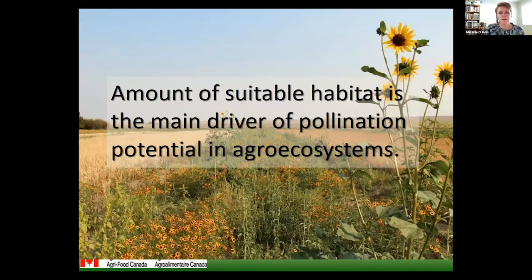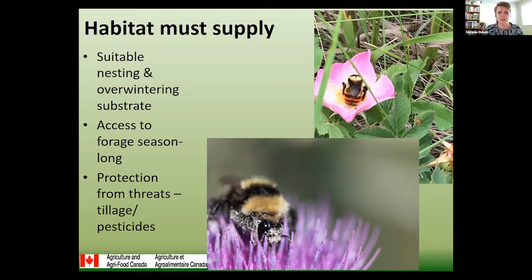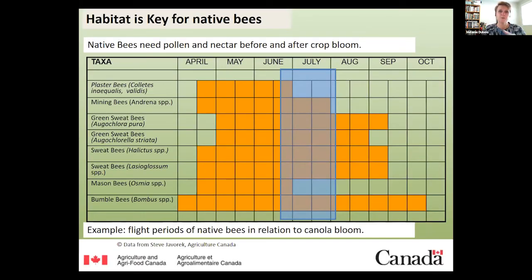Without the habitat, you're not going to have bees. When we're thinking about that habitat, it has to provide certain things: suitable nesting and overwintering substrate. About 80 to 90% of our bees are ground-nesters, meaning they need protection from tillage and pesticides, and they need access to forage season-long — they need stuff to eat all season. Bumblebees fly from April until October. Sometimes people point to mass-flowering crops, but that's just not enough. The chart shows the blooming time for canola in blue — so then what are the bees going to eat outside of that blooming time? That's when those natural areas become really important.